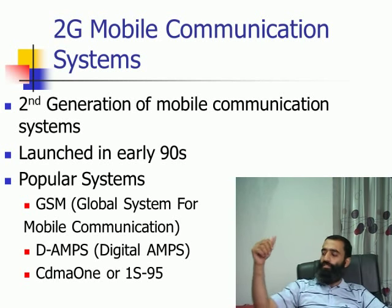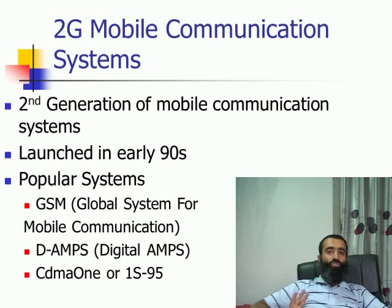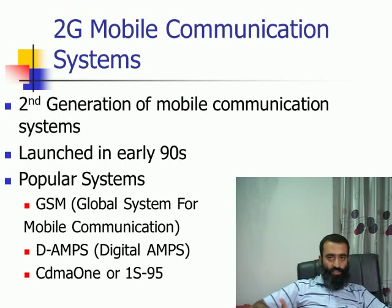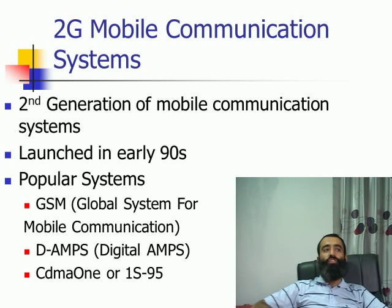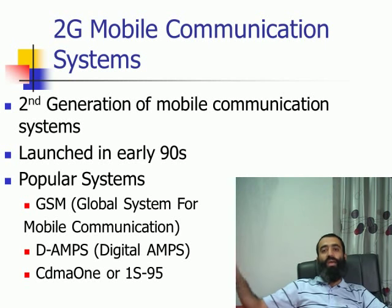The second generation mobile systems were first launched in the early 1990s. There were three most popular 2G systems, although there were others as well. The most popular was the GSM system — Global System for Mobile Communication — which was primarily developed in Europe and was a European standard. It was the most widely deployed mobile system in the world. Then you had Digital AMPS — since AMPS was developed in the United States, its digitized version using digital techniques was called D-AMPS.